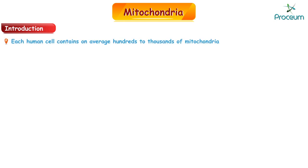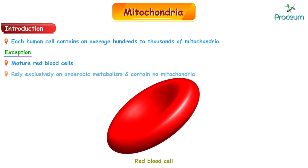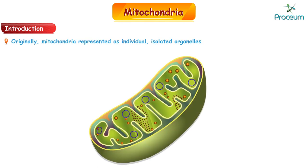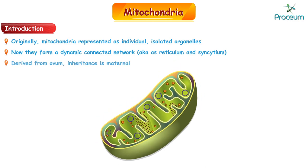Each human cell contains on average hundreds to thousands of mitochondria. The exception is mature red blood cells, which rely exclusively on anaerobic metabolism and contain no mitochondria. Although mitochondria were originally represented as individual isolated organelles, it is now recognized that mitochondria form a dynamic connected network, also called a reticulum or a syncytium. Zygote mitochondria are derived from the ovum, so their inheritance is maternal.